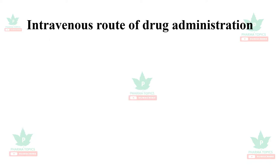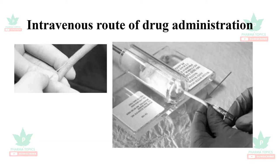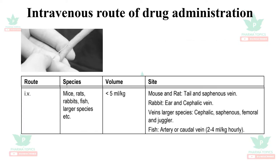The intravenous route of drug administration: rats or mice are kept in a rat holder or mice holder and the tail is usually used. In mice, rats, rabbits, fish, and larger species, the volume can be administered at less than 5 ml per kg. In mouse and rat, tail and saphenous veins are used; in rabbits, the ear and cephalic veins; in larger species, cephalic, saphenous, femoral, and jugular veins; in fishes, artery or caudal veins at 2 to 4 ml per kg hourly.